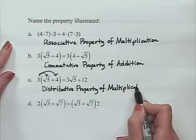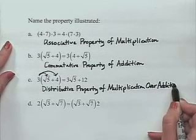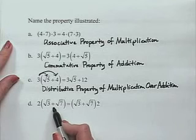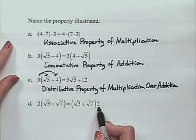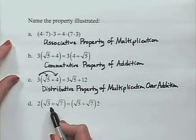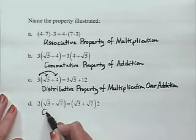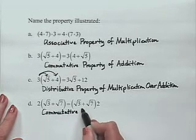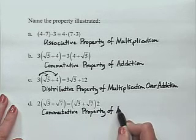Finally, we have 2 × (√3 + √7) = (√3 + √7) × 2. What's inside the parentheses remains the same, but we changed the order in which we're doing the multiplication. Changing the order is the commutative property — here, the commutative property of multiplication.